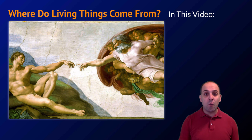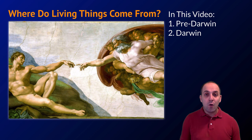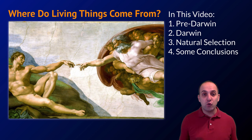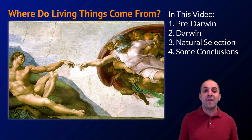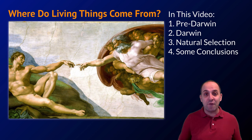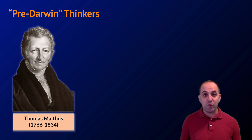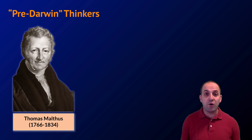Here in this video we're going to talk about what things looked like before Darwin, what Darwin did, how natural selection works, and then some conclusions from natural selection about the larger organization and history of life on earth. So let's begin.